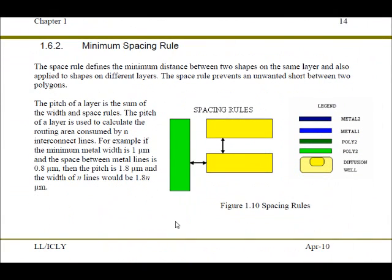The spacing rule defines the minimum distance between two shapes of the same layer and also shapes of different layers. This is to prevent unwanted short between two polygons.